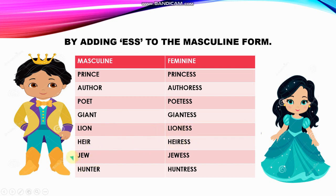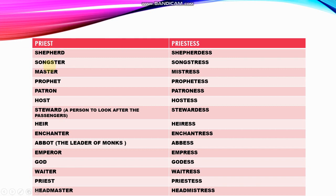Continuing with adding ESS: hare becomes hares, Jew becomes Jewess, hunter becomes huntress. Here the word is slightly different — we learn about that in the next table. More examples: priest becomes priestess, shepherd becomes shepherdess, songster becomes songstress, master becomes mistress, prophet becomes prophetess, patron becomes patroness, host becomes hostess. Steward — a person who looks after passengers on a plane or train — becomes stewardess.